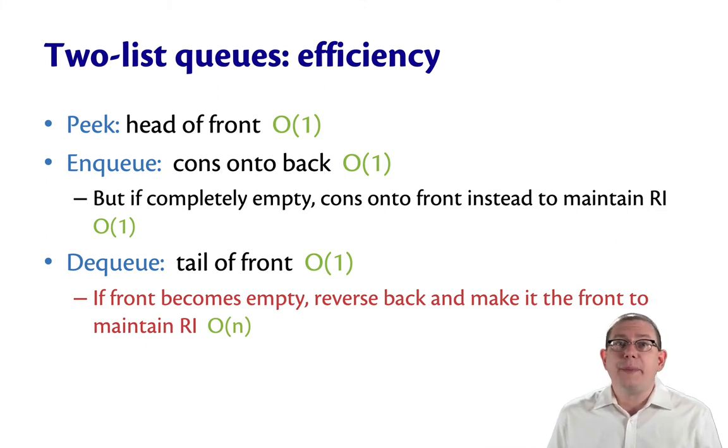It's a linear time operation, because we've got to do something for every single one of the elements that's still in the queue. Specifically, we have to take it out of the back list and cons it onto the front.